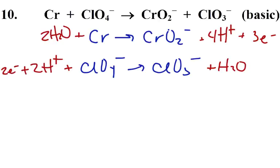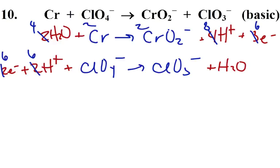This time I have two electrons on the top and three electrons on the bottom, so I'm going to multiply everything on the top by two and multiply everything on the bottom by three. By two, that'll make six electrons, eight hydrogens, two, two and four. On the bottom, by three, that'll make six electrons, six, three, three, and three.